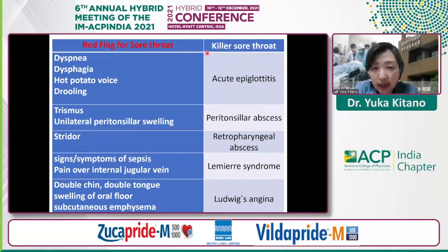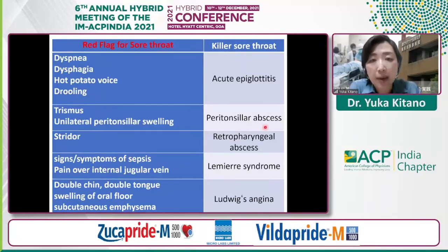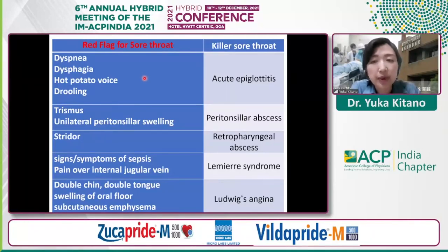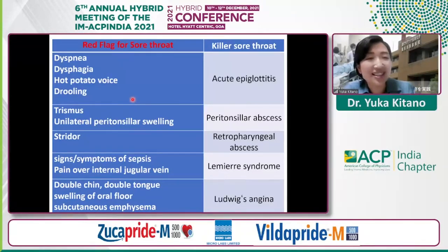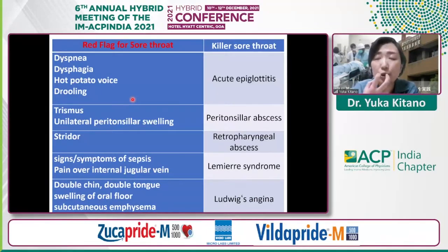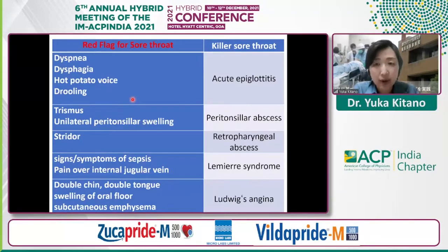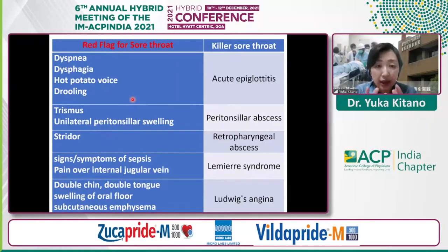Finally, I'd like to review the red flags for sore throat — specifically the five 'killer sore throat' differentials we use at our facility: acute epiglottitis, peritonsillar abscess, retropharyngeal abscess, Lemierre syndrome, and Ludwig's angina. In acute epiglottitis, patients may have dyspnea, dysphagia, or a typical 'hot potato voice,' and excessive drooling. The gestalt I teach younger physicians: the patient talks as if they have a very hot potato in their mouth, leaning forward because of airway narrowing — for example, 'Doctor, I have a very sore throat and I feel short of breath and I can't swallow' — while holding a towel under the mouth because they cannot handle their saliva.